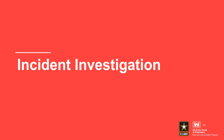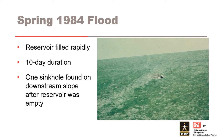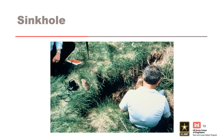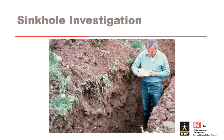A large flood event occurred and rapidly filled Broadhead Dam on 18 April 1984. On May 4, 1984, a large sinkhole was observed at Station 4+13 on the downstream side of the embankment, about 160 feet downstream of the centerline. The sinkhole was about 6 feet in diameter and 4 feet deep. The sinkhole was investigated using a backhoe.